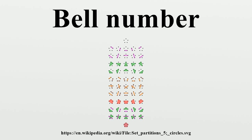The Bell numbers can easily be calculated by creating the so-called Bell triangle, also called Aitken's array or the Peirce triangle after Alexander Aitken and Charles Sanders Peirce. Start with the number 1 on a row by itself. For each new row, determine numbers not in the left column by taking the sum of the number to the left and the number diagonally up and to the left. The number on the left-hand side of a given row is the Bell number for that row.